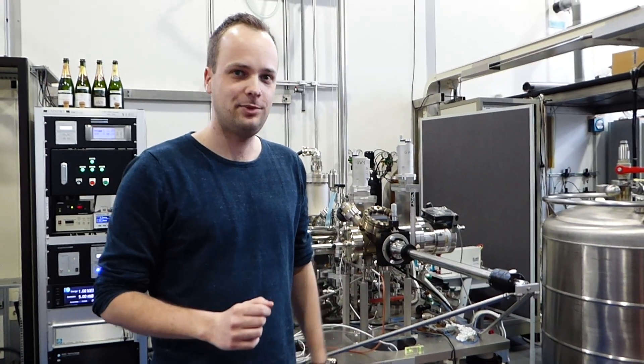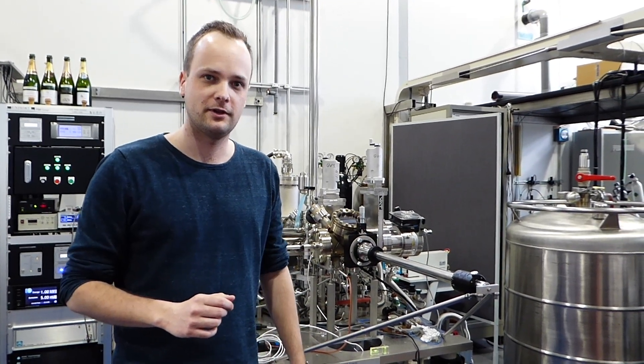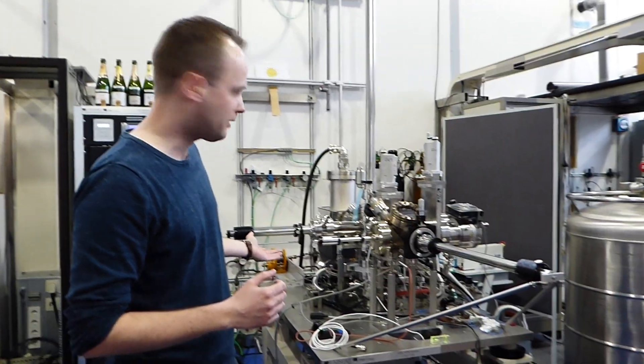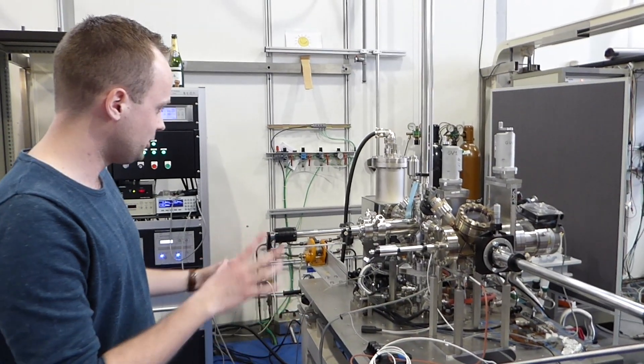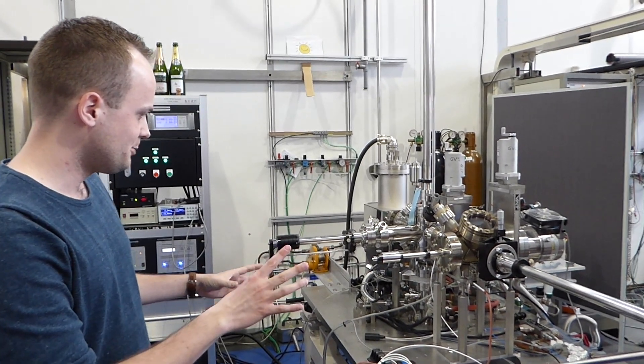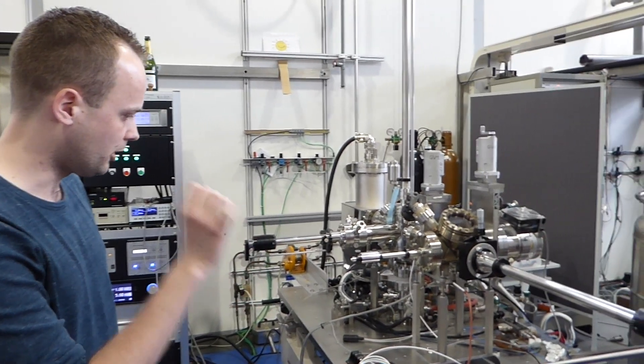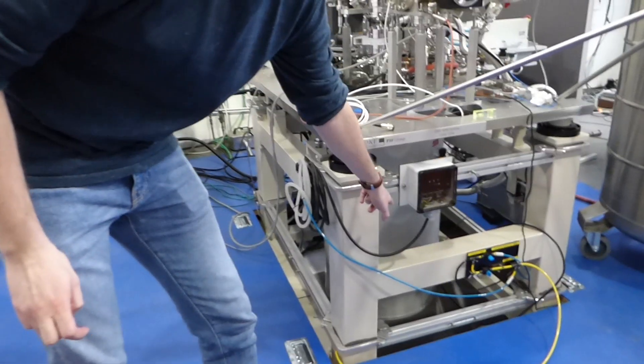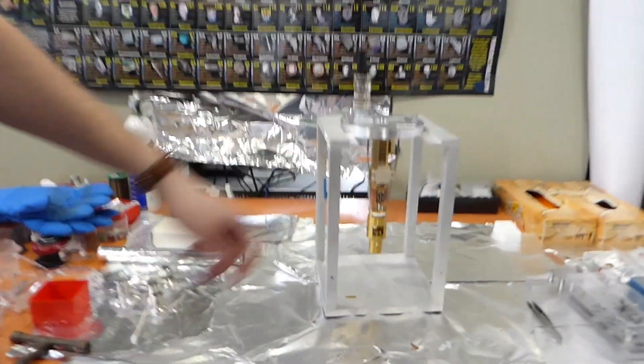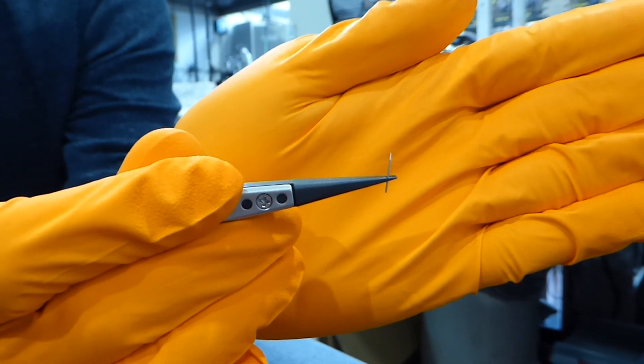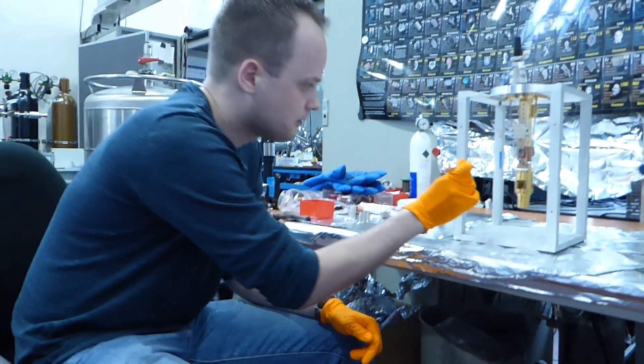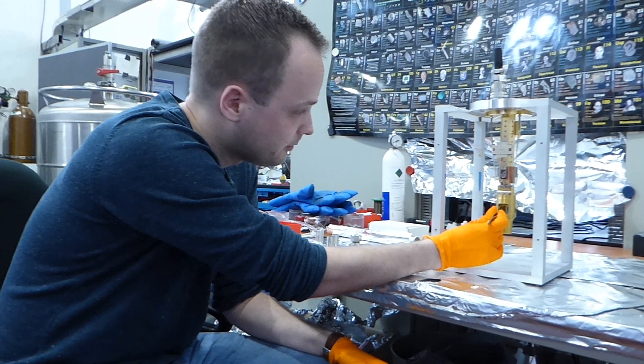Welcome to the Kamerlingh Onnes lab. The lab is still named after the discovery of liquid helium and superconductivity. And here is our microscope. This machine looks very complicated and complex, but actually the very heart of the microscope is very small. It's down inside there in the big dewar. And just to show you, this is how it looks. This is a very sharp needle or tip that we use to scan the materials. This tip goes inside here in the microscope.